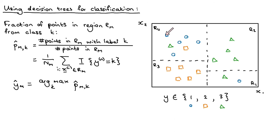In this region, we have 1, 2, 3, 4, 5, 6, 7 training points. And for the blue class, the blue circle class, we've got 1, 2, 3, 4, 5 out of 7. So that's 5 out of 7.